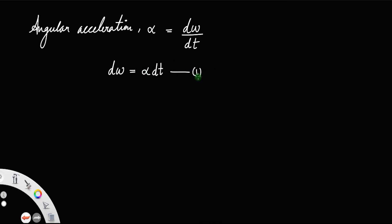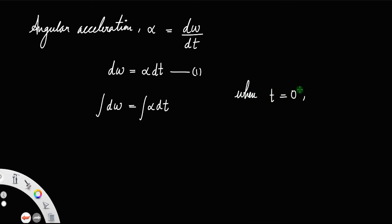Let us represent that as equation number 1. Now, in order to get omega and t, we must integrate equation 1, that is: integral dω is equal to integral alpha dt. When t equals 0, that is at the initial time, we have angular velocity equal to the initial angular velocity omega-zero. And after a time t equal to t, we have angular velocity omega. So the limit here is omega-zero to omega, and since the variable is time, it is from 0 to t.